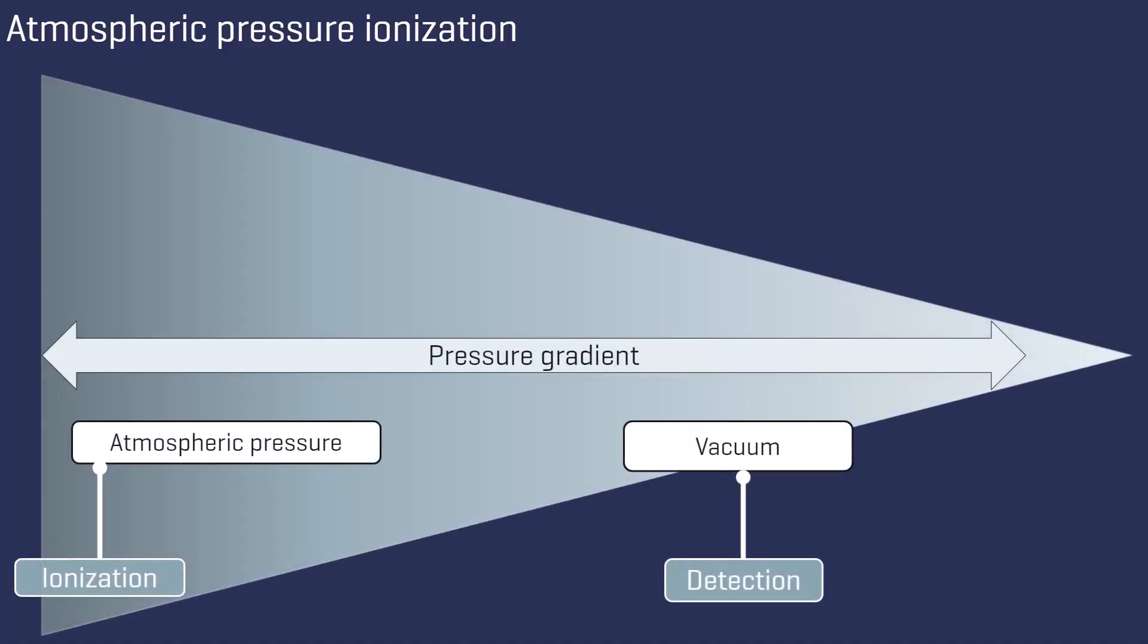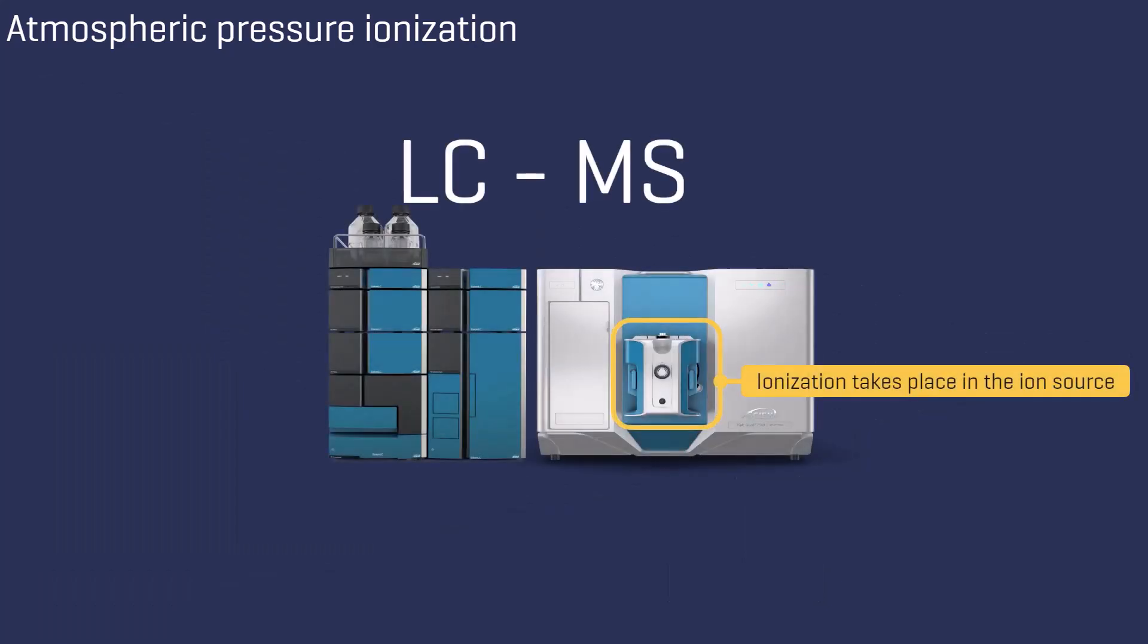Atmospheric pressure ionization is a common term for techniques in which the ionization process starts at atmospheric pressure. The ionization process takes place in the ion source, that is between the LC and mass analyzer. You can think of it as a hyphen in LC-MS.